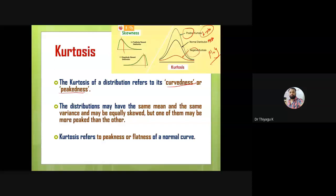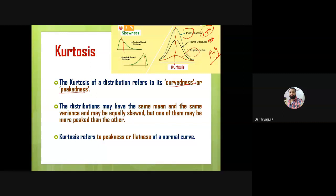Once again I will highlight — the distribution may have the same mean and the same variance and may be equally skewed, so here the skewness is also zero. If I divide the center in the three curves and divide the center, we may get three graphs also — fifty percent, fifty percent. Therefore here the asymmetry is not there. It is symmetric in nature, but only the problem is the variation from the normality in terms of height. So kurtosis refers to peakness and flatness.